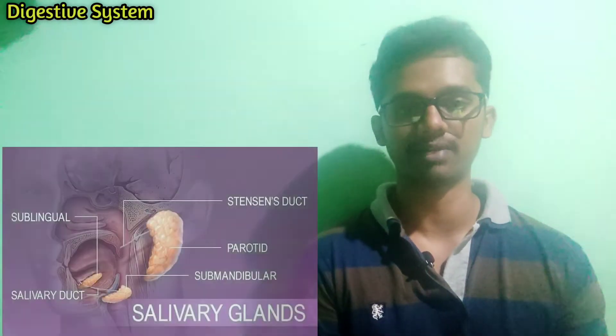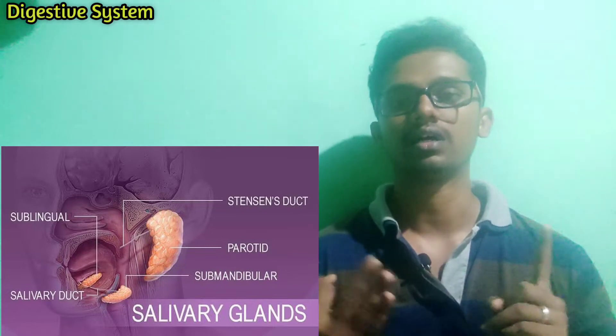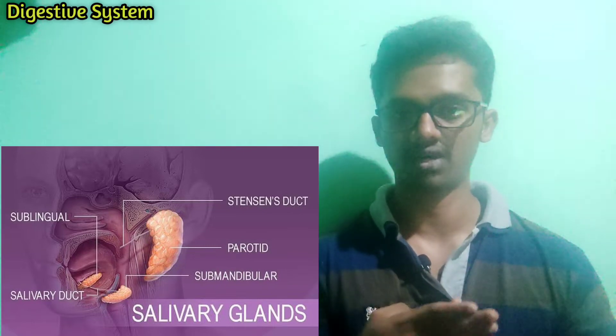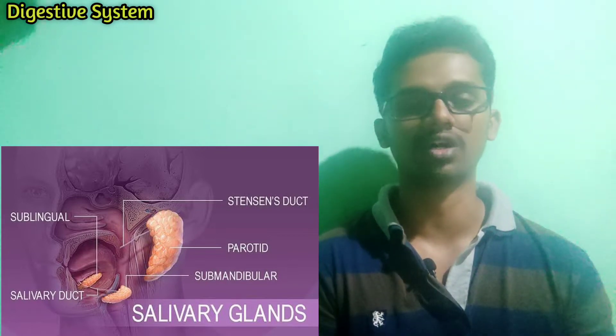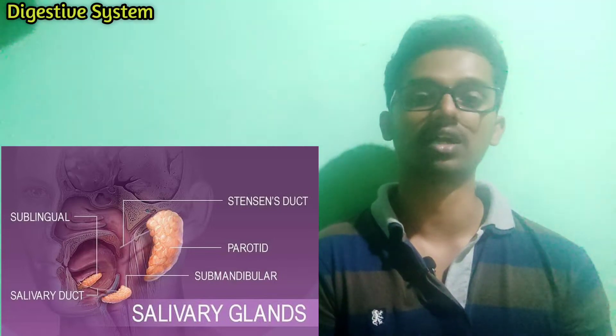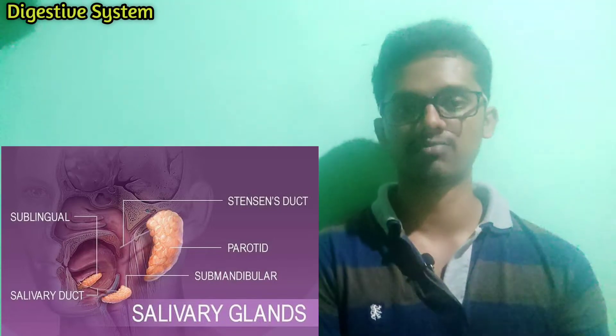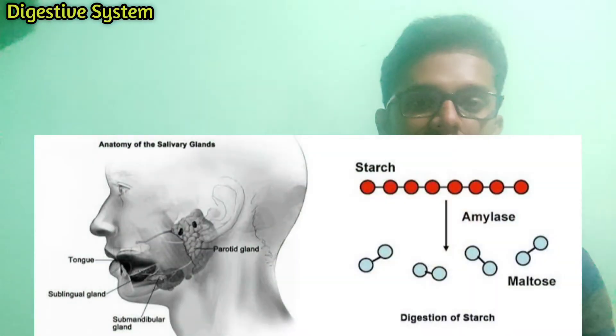Next are the accessory glands — the salivary glands. There are three salivary glands: the parotid gland, the sub-mandibular gland, and the sublingual gland. They produce saliva and salivary amylase. These are major secretory glands, and they secrete digestive enzymes. Salivary amylase helps begin the digestion of carbohydrates in the mouth, aiding in the chemical breakdown of food.